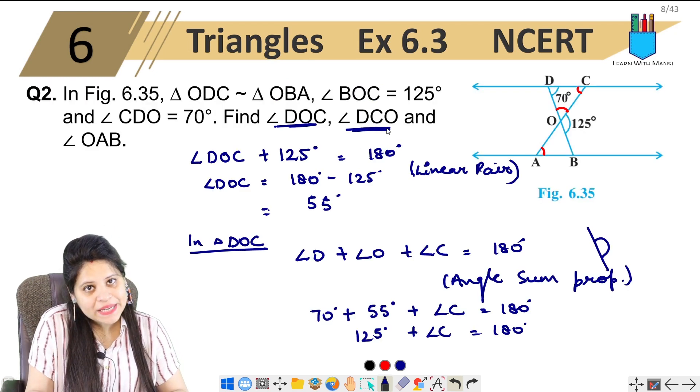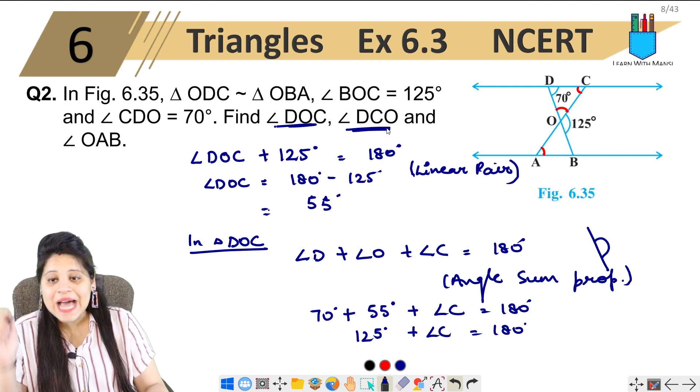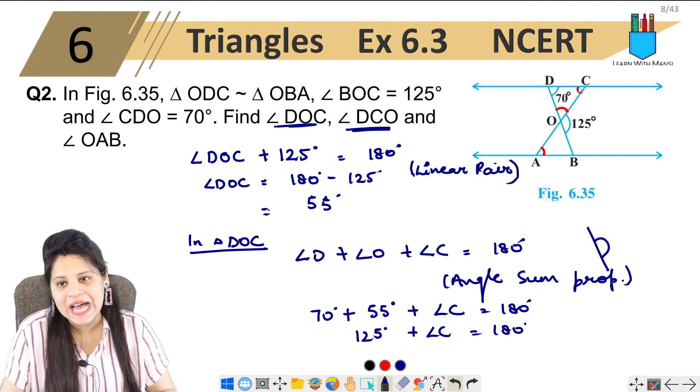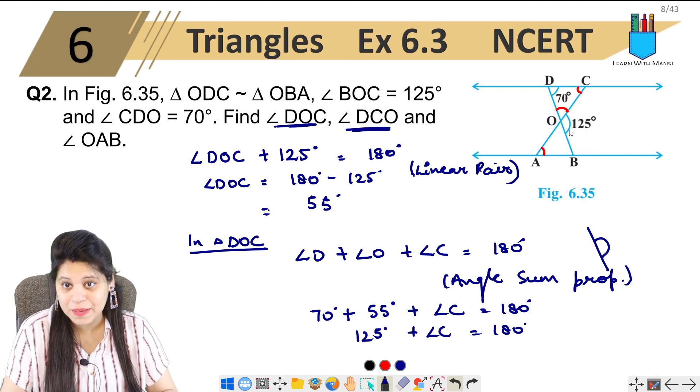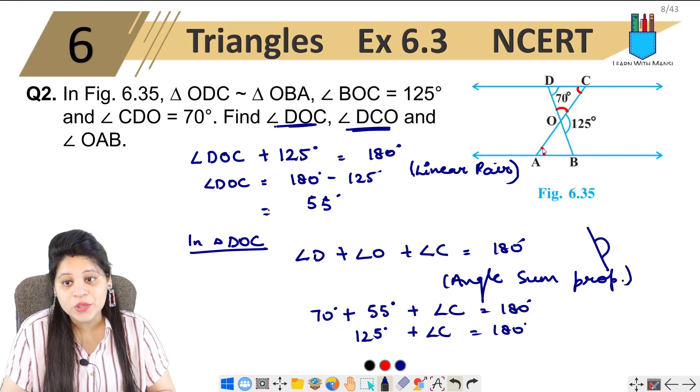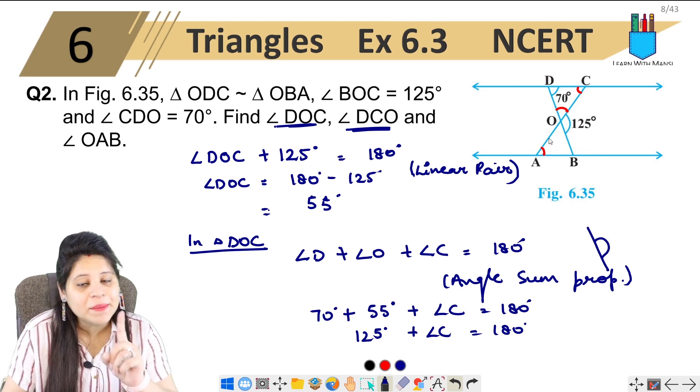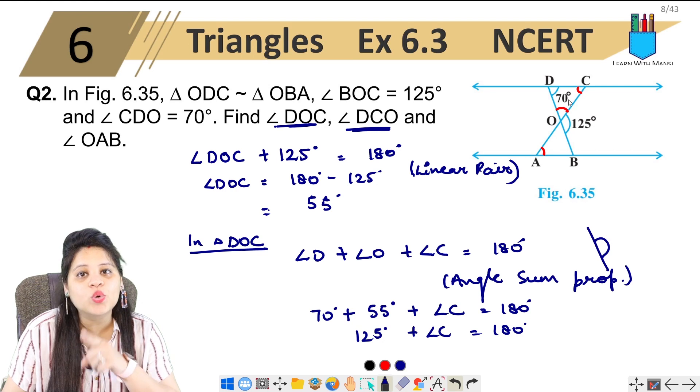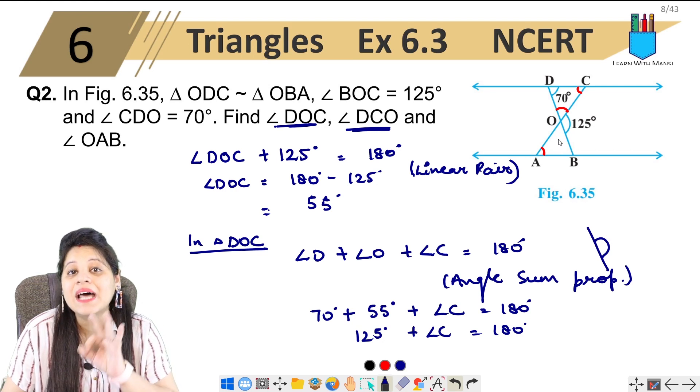So we have found two angles. Now if I talk about angle OAB, look at one thing. We have the same angles. We have two similar triangles.